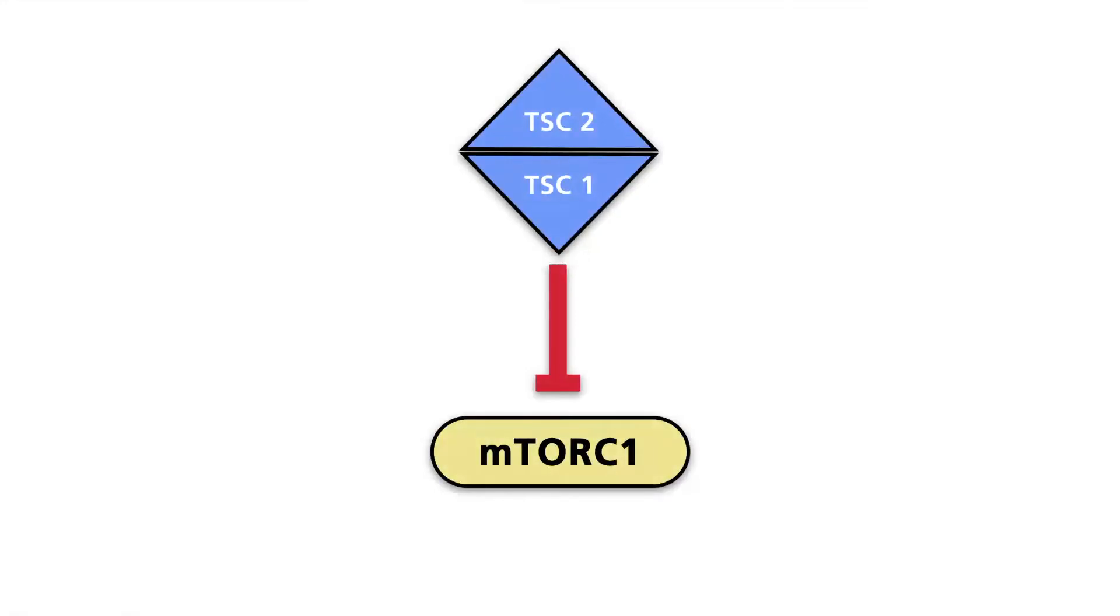Mutations in either TSC1 or TSC2 cause tuberous sclerosis complex, a syndrome also accompanied by hamartomas. The inactivation of either TSC1 or TSC2 leads to increased activity of mTOR complex 1.